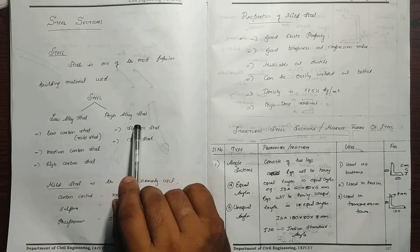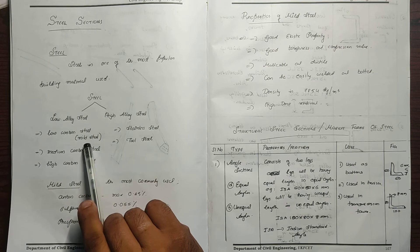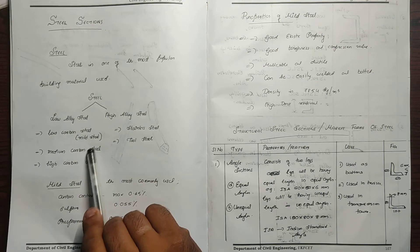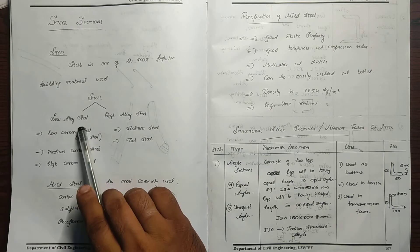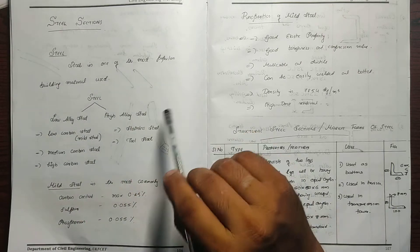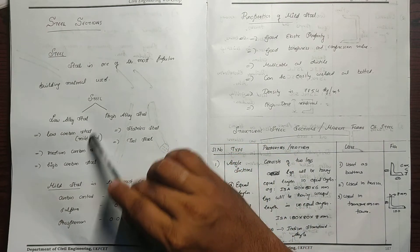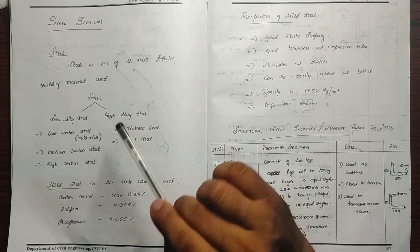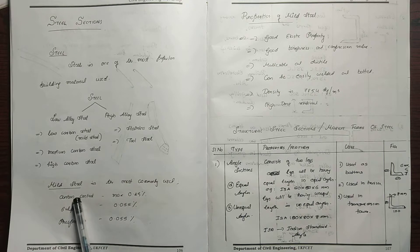There are two main categories: low alloy steel and high alloy steel. Within low alloy steel, there is low carbon steel, also called Mild steel. I have three categories of low alloy steel: low carbon steel, medium carbon steel, and high carbon steel.